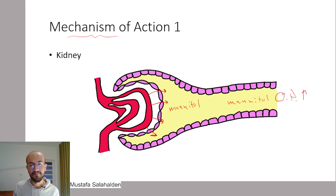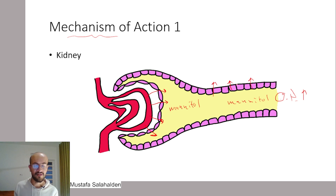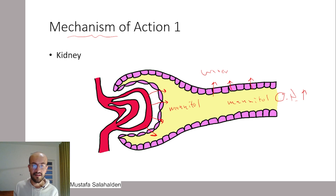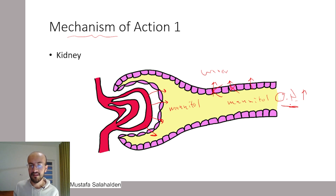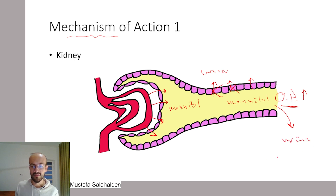This increased osmotic pressure inside the filtrate prevents water from being reabsorbed. Normally in the proximal convoluted tubule water is reabsorbed, but when using mannitol some of this water cannot be reabsorbed because mannitol increases the osmotic pressure in the filtrate. This leads to water being excreted into the urine, resulting in osmotic diuresis.